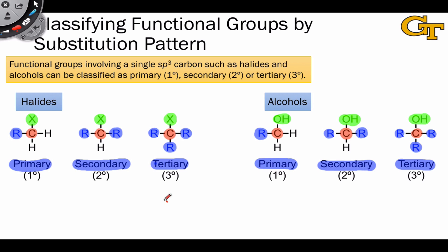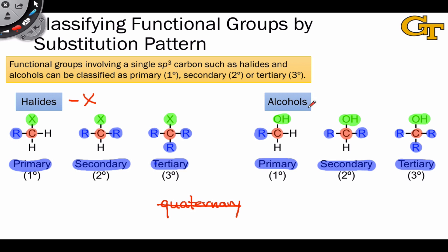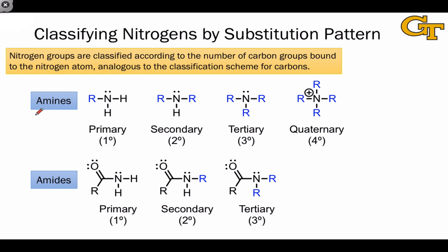Notice in both of these cases that it doesn't make sense to talk about a quaternary alkyl halide or alcohol, because one of the groups attached to the SP3 hybridized carbon atom is not a carbon group by definition — since halides must include a halogen atom and alcohols must include a hydroxyl group bound to the SP3 hybridized carbon.